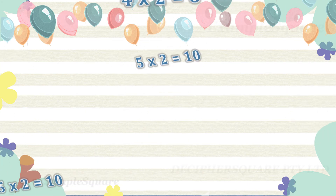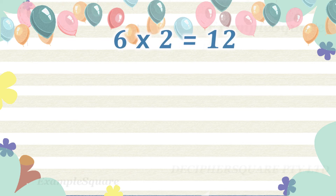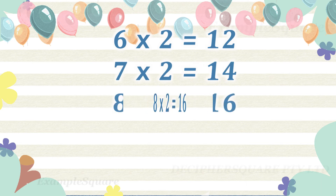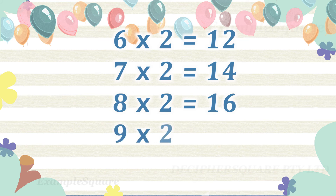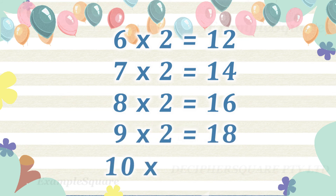6 times 2 is 12, 7 times 2 is 14, 8 times 2 is 16, 9 times 2 is 18, 10 times 2 is 20.